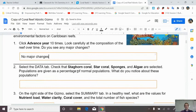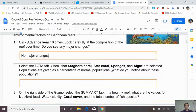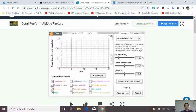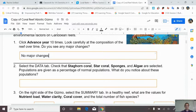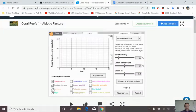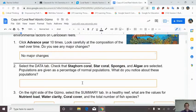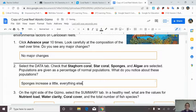Here it is. Advance 10 years. So if you look, we'll restart. See how it is now. Did anything major change? No. No major changes. Select the data tab. Check that staghorn, star, sponges, and algae are selected. Populations are given in percent. What do you notice about these populations?